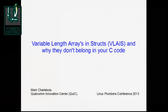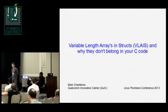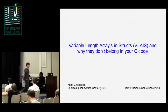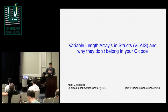This is one of the few cases that are fundamental blockers for using another compiler to compile the kernel. You asked if there are issues in C other than just the issues that are in assembly. This is one of those things. Title: variable length arrays in structs and why they do not belong in your C code.